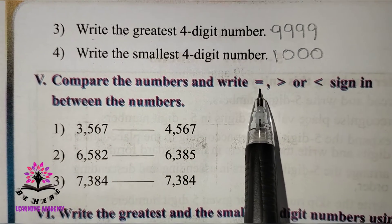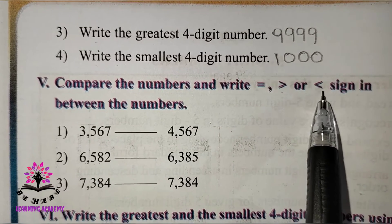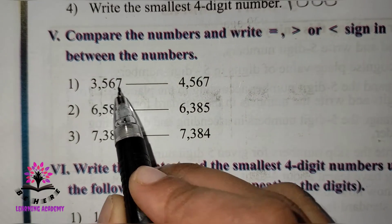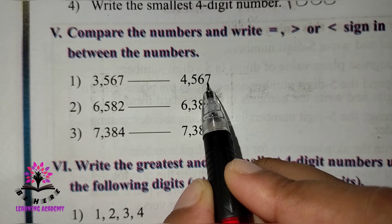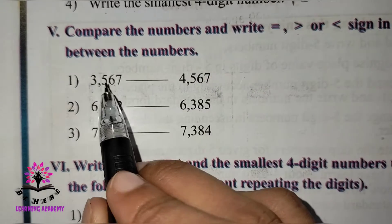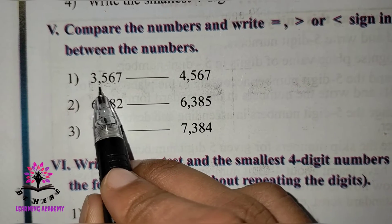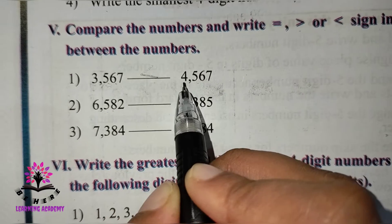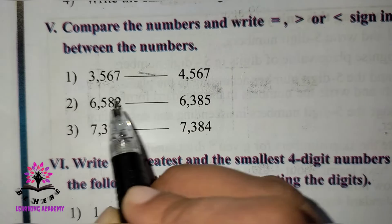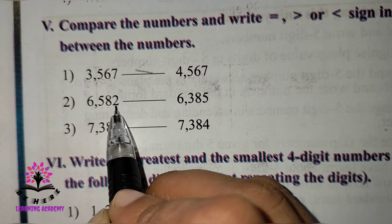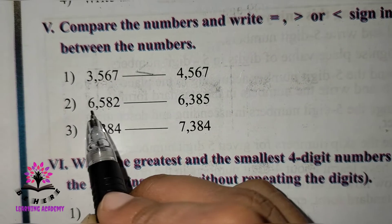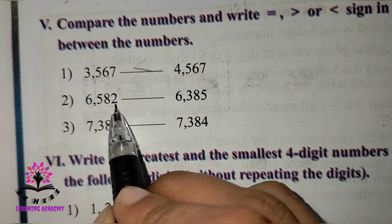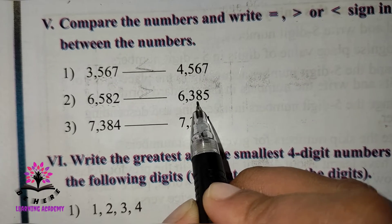Compare the numbers and write equal to, greater than, or lesser than sign. 3567 versus 4567: comparing the two numbers, 3567 is smaller, so 3567 is less than 4567. Next: 6582 versus 6385 — 6582 is greater than 6385.